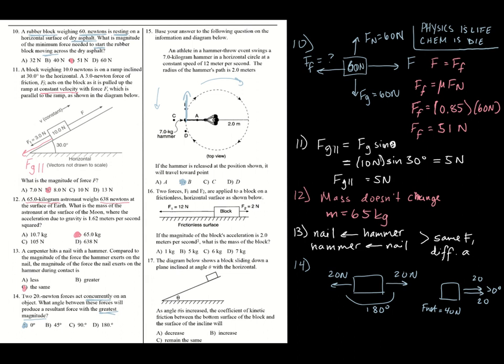Number sixteen: two forces F1 and F2 are applied on opposing sides — 12 newtons and 2 newtons. The net force is their difference: 10 newtons. Using F equals ma, with net force of 10 newtons and acceleration of 2 meters per second squared: 10 divided by 2 gives us 5 kilograms for the mass.